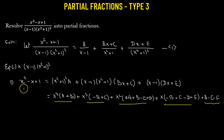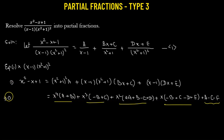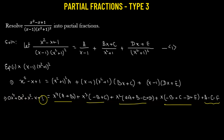On the left hand side we only have three terms, so we need two more. Since the x to the power of 4 and x cubed terms are not present, we rewrite the left hand side as 0 times x to the power of 4, plus 0 times x cubed, plus x squared minus x plus 1. Now we have five terms on both sides.